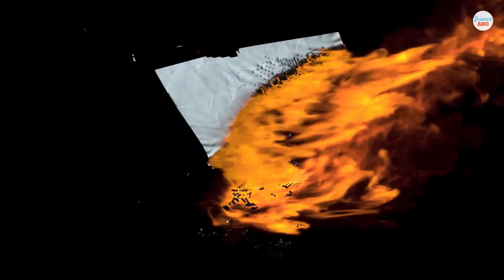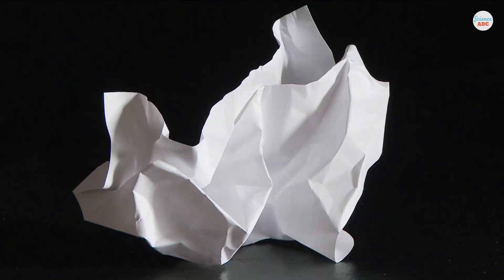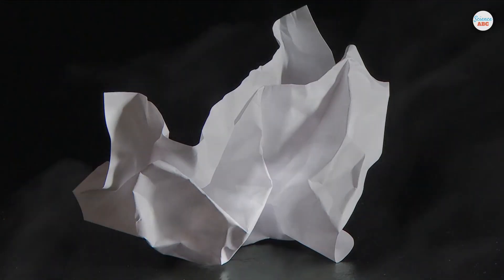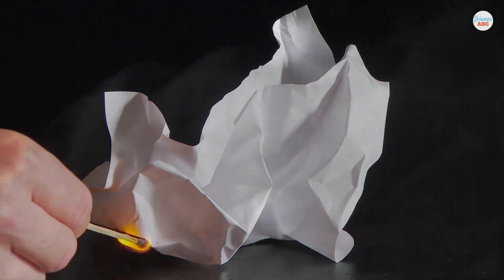Consider the example of burning a piece of paper. In that scenario, paper is the fuel, the oxidizer is gaseous oxygen, and heat is provided by lighting a match and igniting it.